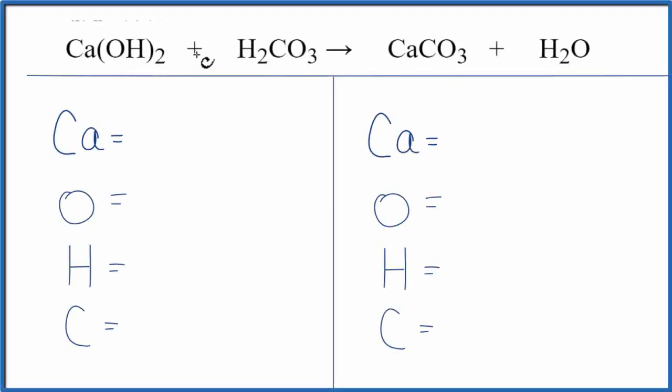In this equation, we have Ca(OH)₂ plus H₂CO₃. This is calcium hydroxide, and this is carbonic acid. So let's balance the equation. We'll count the atoms up on both sides first.